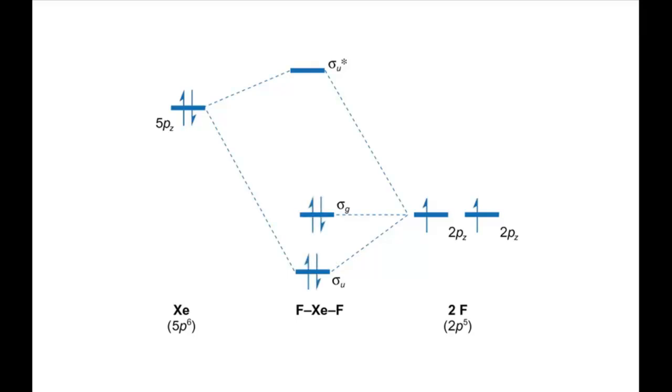This means that the bonding and the non-bonding orbitals are filled but the antibonding orbital is empty. This bonding pattern is described as a three-center four-electron bond.